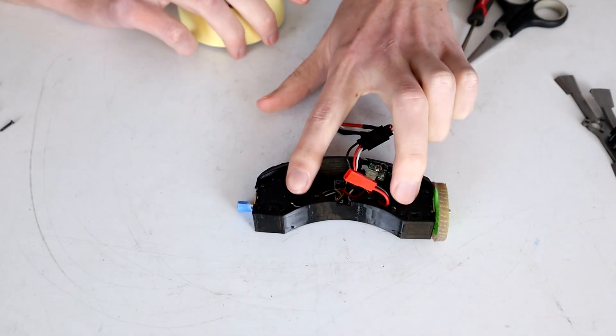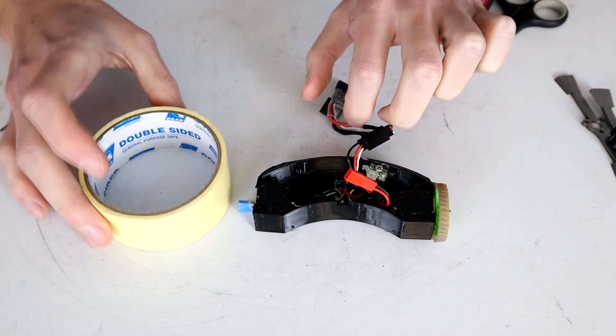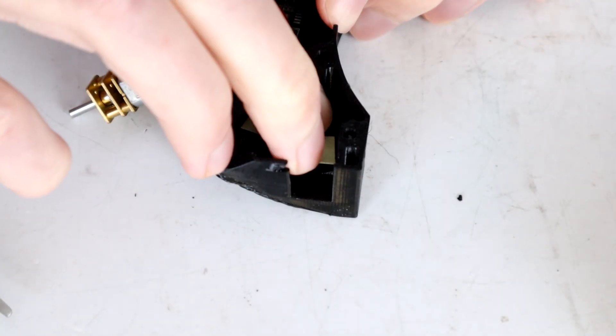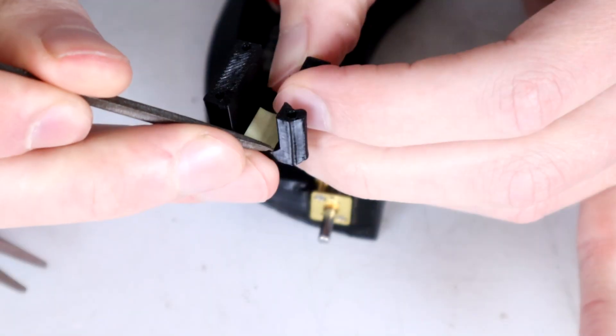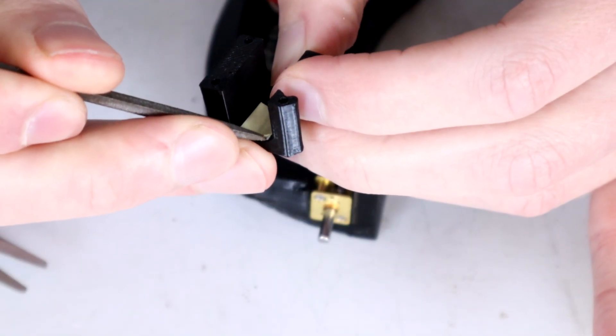To stop this from happening again and having to replace another motor, I'm going to use some double-sided tape. The easy thing here is literally just a tiny little bit of double-sided tape underneath the motor, top and bottom, to hold it in place.